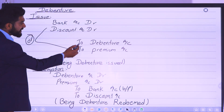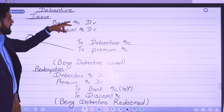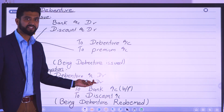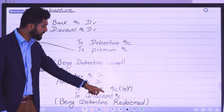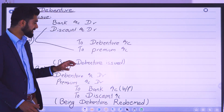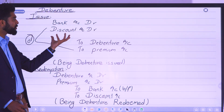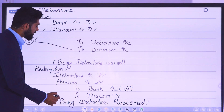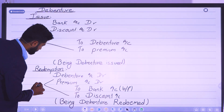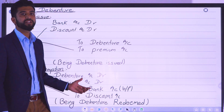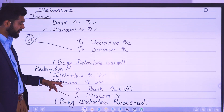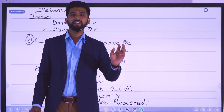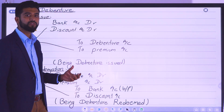For redemption: Debentures account debit, Bank account credit. Premium on redemption: debit. Discount on redemption: credit. So to summarize — at issue: discount debit, premium credit; at redemption: premium debit, discount credit.